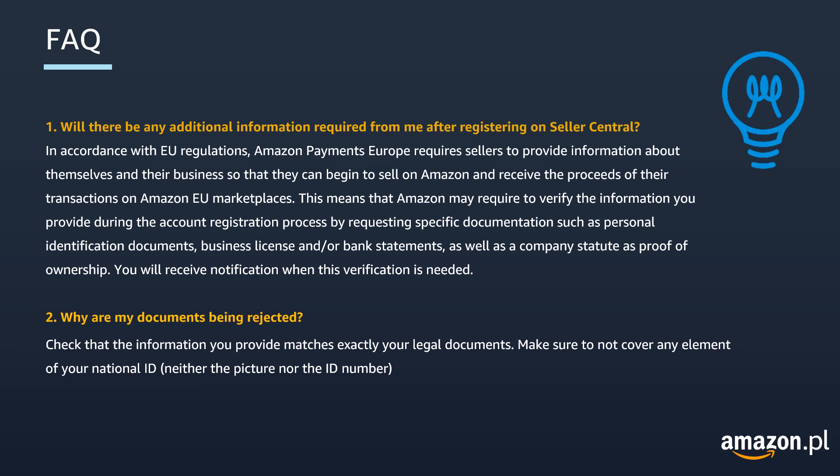Question 1: Will there be any additional information required from you after registering on Seller Central? Yes. In accordance with EU regulations, Amazon Payments Europe requires sellers to provide information about themselves and their business so that they can begin to sell on Amazon and receive the proceeds of their transactions on Amazon EU marketplaces. This means that Amazon may require verification of the information you provide during the account registration process by requesting specific documentation such as personal ID documents, business licenses, bank statements, or company statutes as proof of ownership. You will receive notifications from us when these verifications are needed.